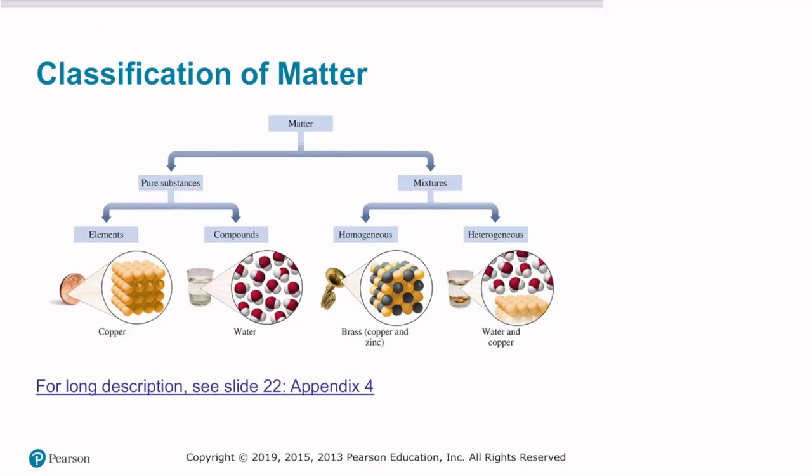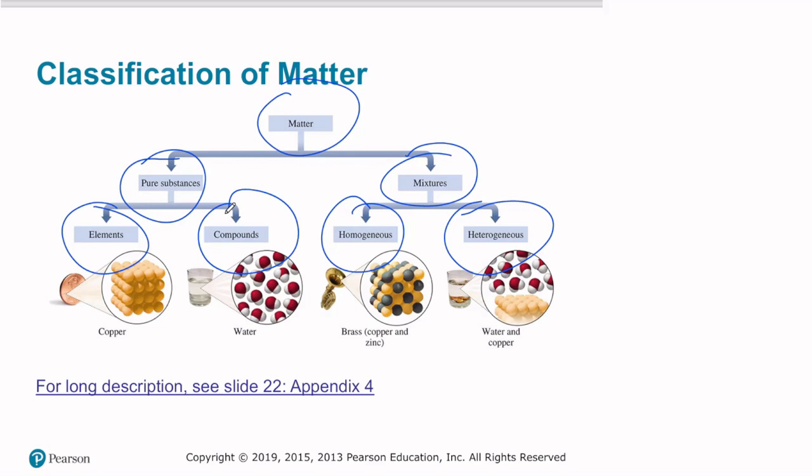As you see, we classified matter according to whether it is a pure substance or a mixture. Mixtures can be separated into homogeneous and heterogeneous. And pure substances can be separated into elements and compounds. An example of a pure substance as shown here is copper. A compound, for example, is water. A homogeneous mixture could be brass. And a heterogeneous mixture could be something like water and copper, or sand and water.